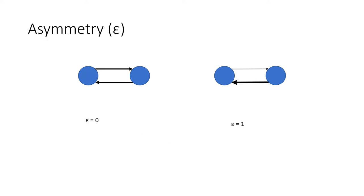Next we have asymmetry, denoted by the symbol epsilon. When two neurons are connected with equal strength or weight, the connection is symmetric, and epsilon equals zero. In all other cases epsilon equals one, representing an asymmetric situation — for example, two neurons that are connected to each other but with different strengths or weights.